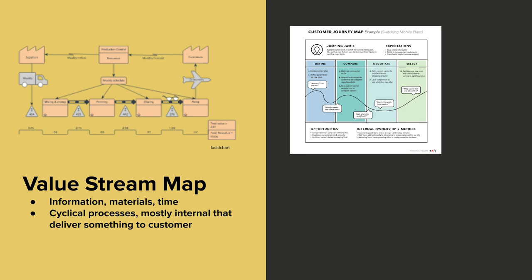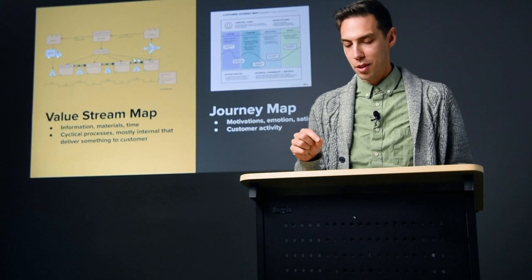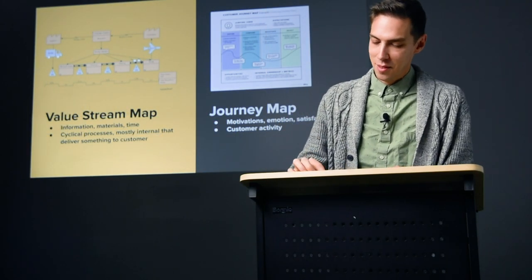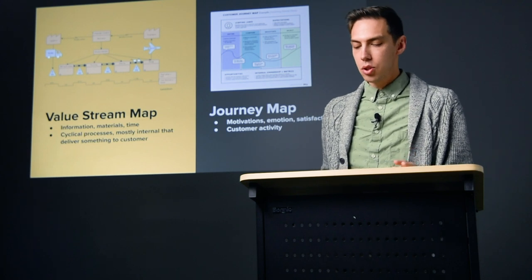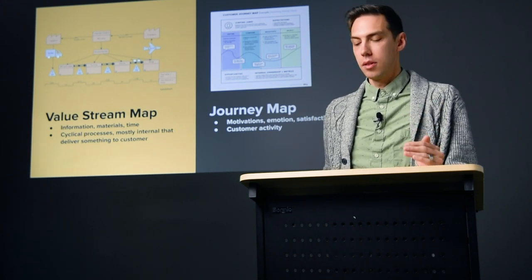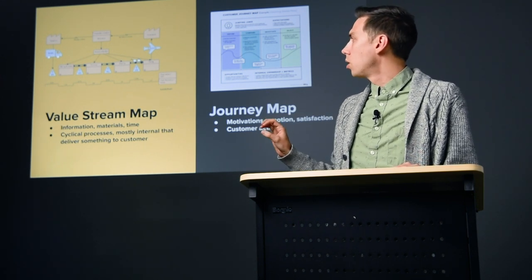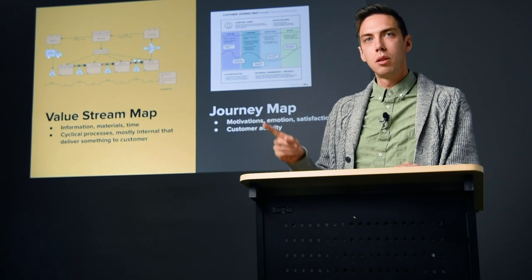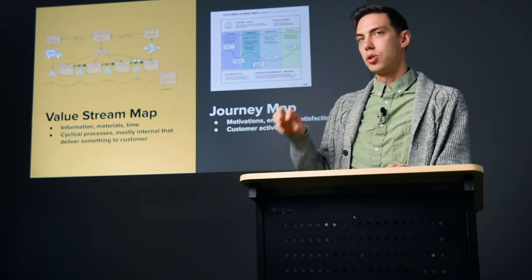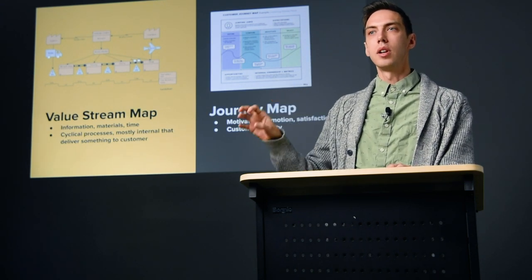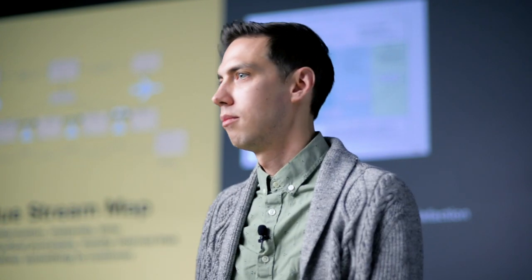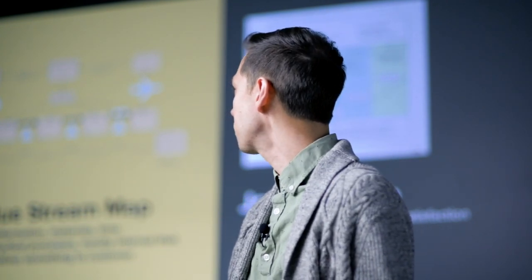Let's compare a value stream map and a journey map. A value stream map focuses on three things: information, materials, and time. It's only really useful for cyclical, repeatable processes that are internal and delivering something to a customer — and the customer could be the next part of an internal process.